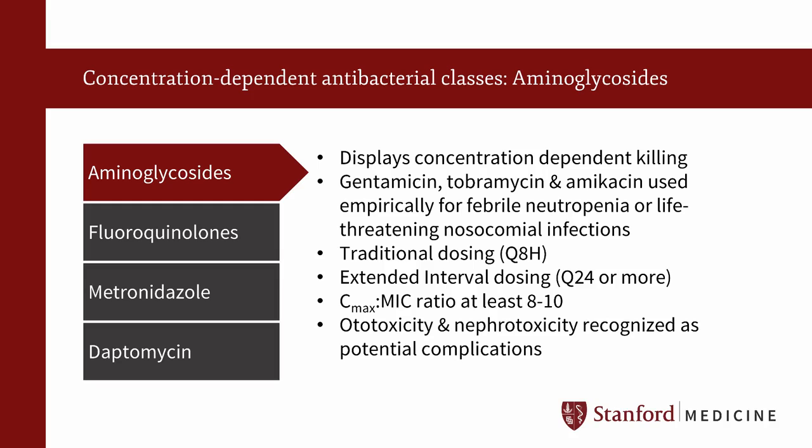For the treatment of gram-negative infections, there are two methods of aminoglycoside dosing. The older of the two approaches is to administer multiple doses, usually 1.7 to 2 mg per kg every 8 hours for gentamicin and tobramycin. It has long been recognized that ototoxicity and nephrotoxicity are potential complications of aminoglycoside therapy.